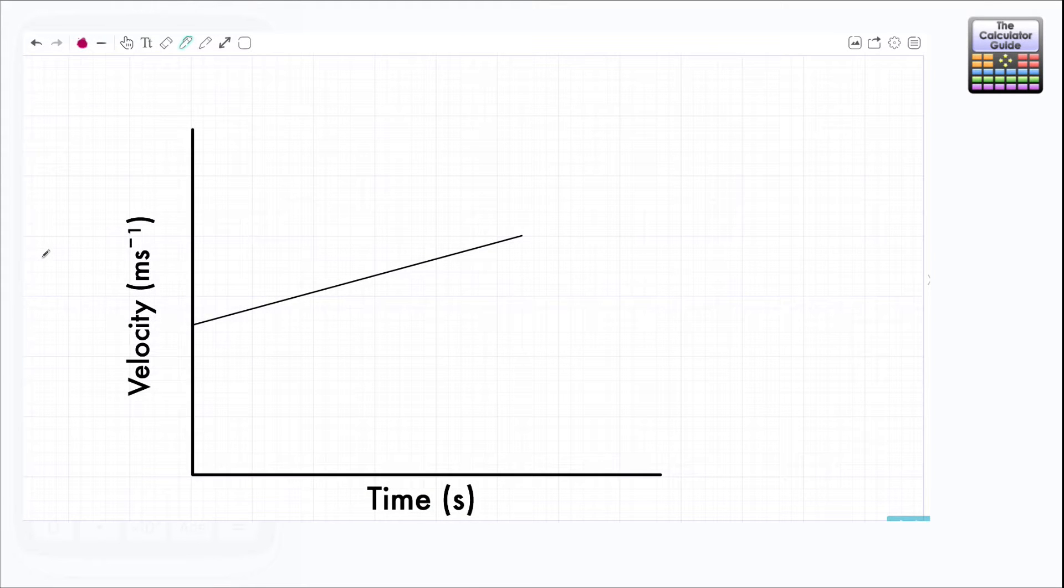I'm going to leave the calculator behind for this video and here we have a velocity time graph. We have velocity in meters per second on the y-axis and time in seconds on the x-axis, and you can see that we have an increasing line here representing an increase in the velocity. This is different from the first video where we just had a horizontal line representing a constant velocity. In this particular example the velocity is changing or increasing.